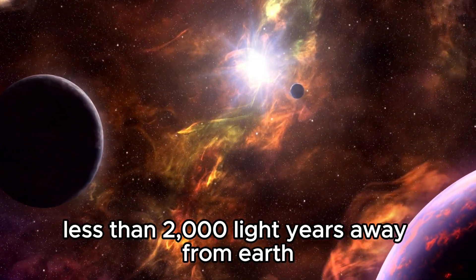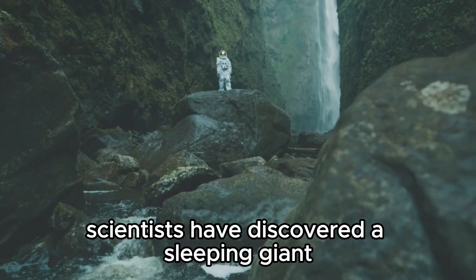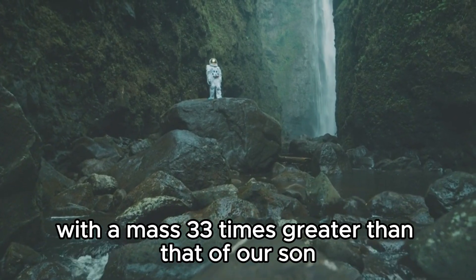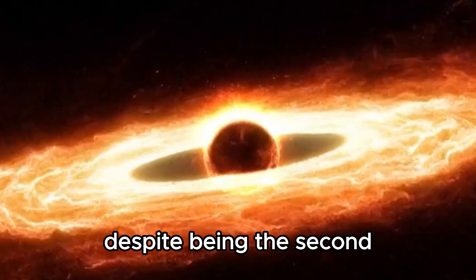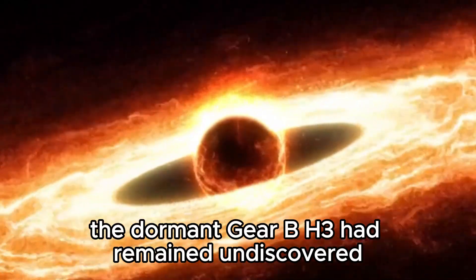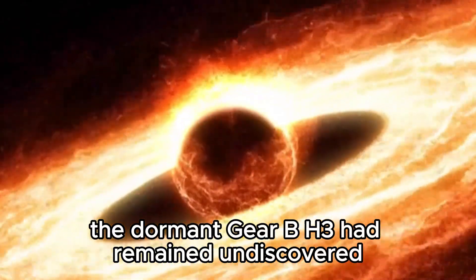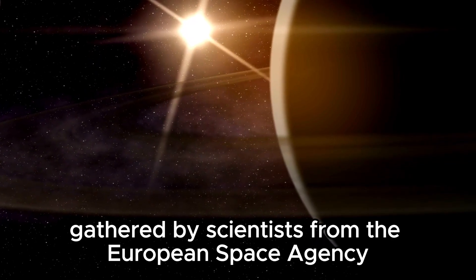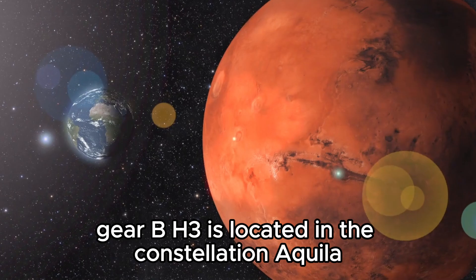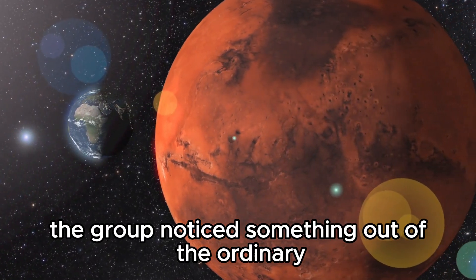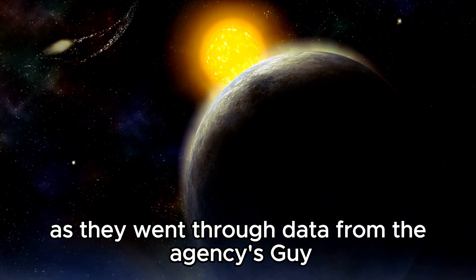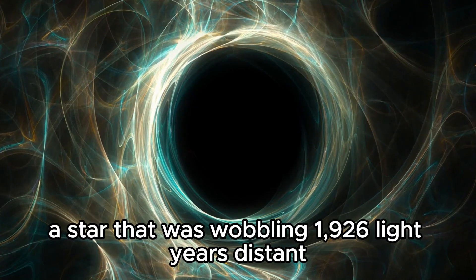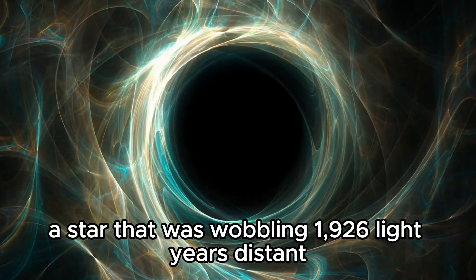Less than 2,000 light years away from Earth, scientists have discovered a sleeping giant: the Milky Way's largest stellar black hole, with a mass 33 times greater than that of our Sun. Despite being the second-closest known black hole to Earth, the dormant Gaia BH-3 had remained undiscovered. Discovered by accident in a deluge of data and observations gathered by scientists from the European Space Agency, Gaia BH-3 is located in the constellation Aquila, the eagle. The group noticed something out of the ordinary as they went through data from the agency's Gaia mission: a star that was wobbling 1,926 light years distant.